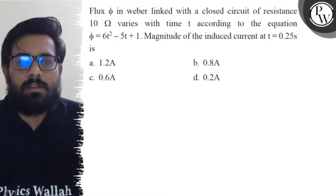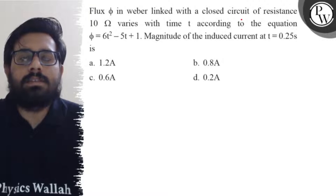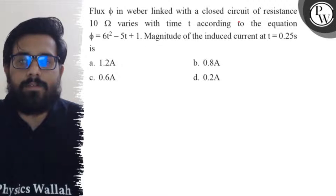Hello everyone, so let's see the question. There is a flux in weber linked with a closed circuit of resistance 10 ohm which varies with time t according to the equation φ = 6t² - 5t + 1.